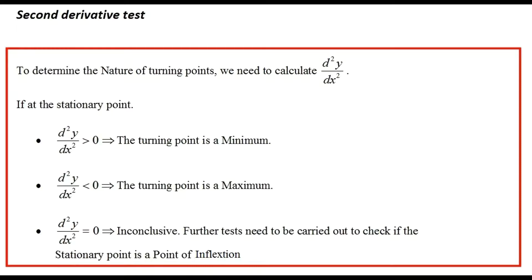The third option: if d²y/dx² is equal to zero at the stationary point, the test is inconclusive, which means that further tests need to be carried out to check whether this stationary point is actually a point of inflection.